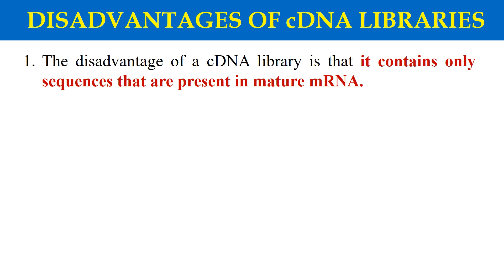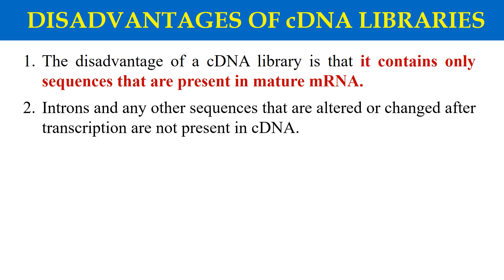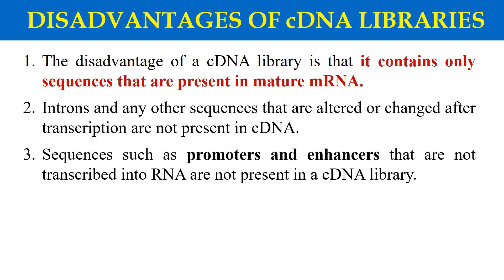These cDNA libraries also have some disadvantages. Since they only contain the mature messenger RNA, you do not get any information about non-coding sequences — only about the coding sequences or mature RNA. So this is one disadvantage. Next, introns and other sequences are absent, which are generally not present in the cDNA. Similarly, you do not get any information about introns, which are also not in the cDNA molecule. Furthermore, sequences like promoters and enhancers, which during transcription are not transcribed, are also absent — meaning in messenger RNA you do not get the promoter, activator, or enhancer sequence. So this is also a disadvantage of cDNA libraries: you do not get any information about promoters, enhancers, or other regulatory sequences, because these sequences are not present in the cDNA libraries.